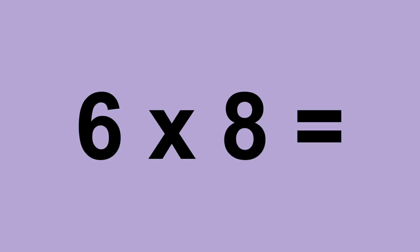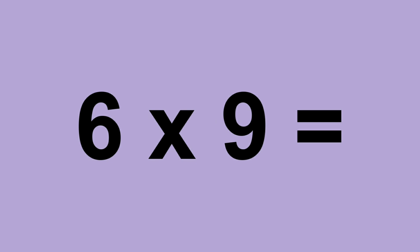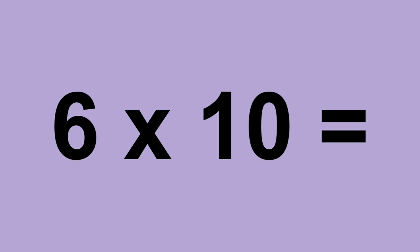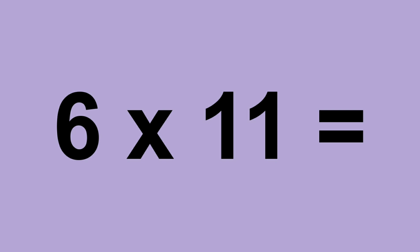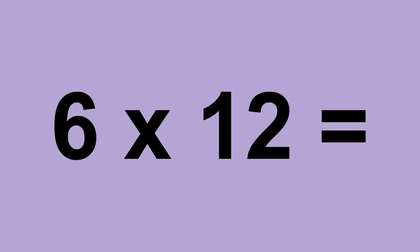Six times eight equals forty-eight. Six times nine equals fifty-four. Six times ten equals sixty. Six times eleven equals sixty. Six times twelve equals seventy-two.